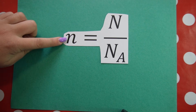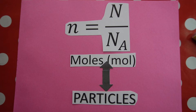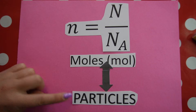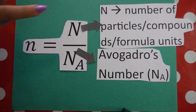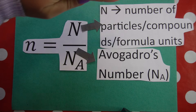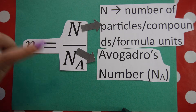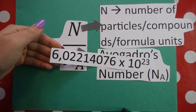We can also calculate number of moles if given the number of atoms, number of particles, number of compounds, or formula units. You use Avogadro's number and the following formula. This formula allows us to convert between number of moles, N, and number of particles, big N. Avogadro's number is a constant and it is 6.02 times 10 to the 23.